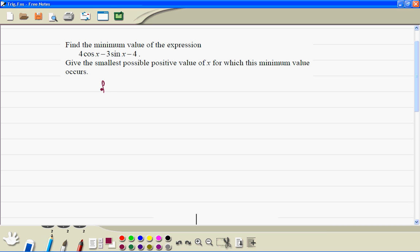First we write the function 4 cosine x minus 3 sine x minus 4. First we deal with this, so we write this in the harmonic form.